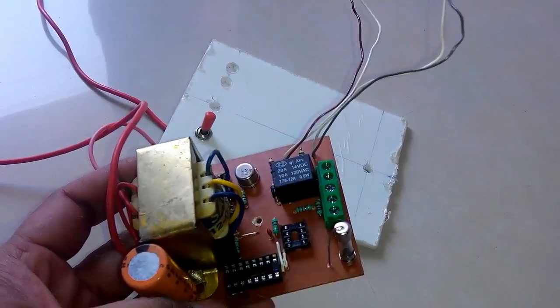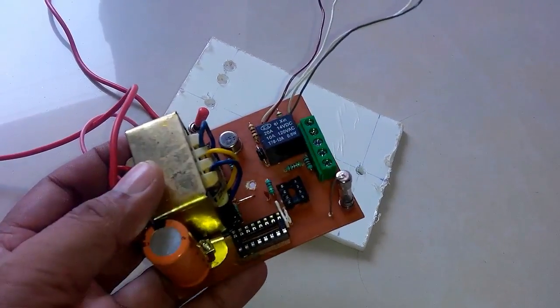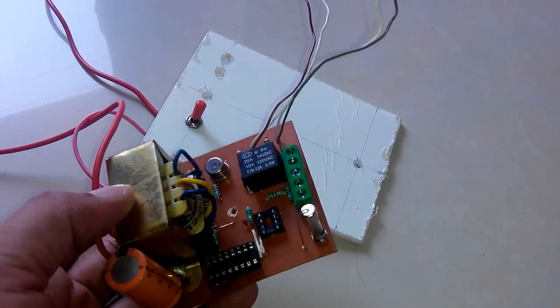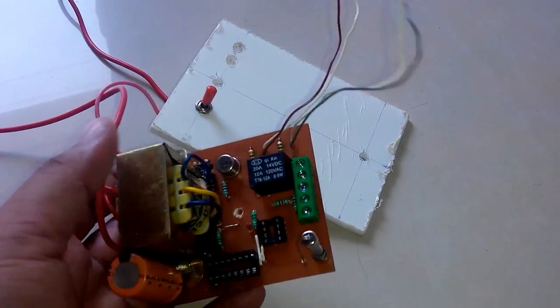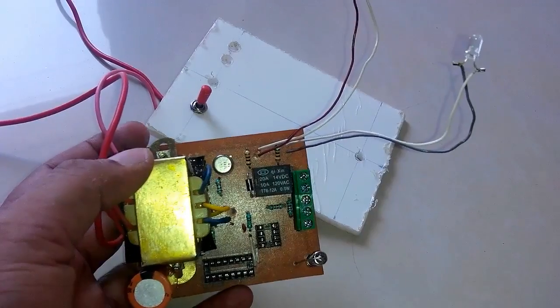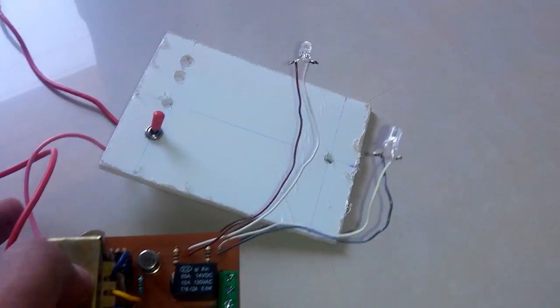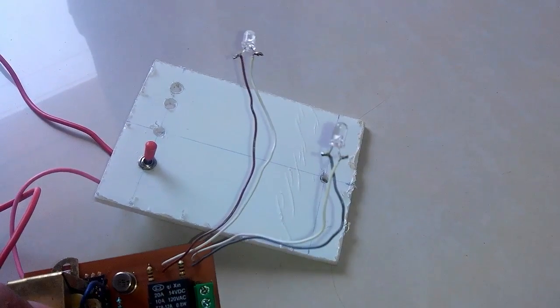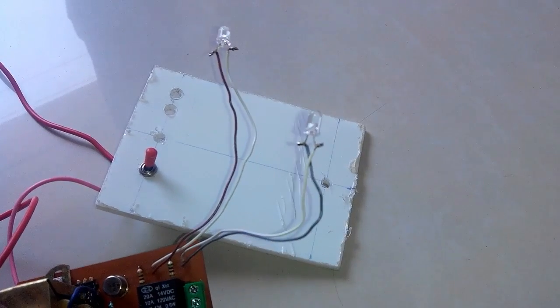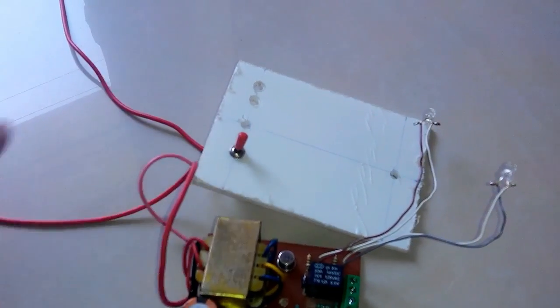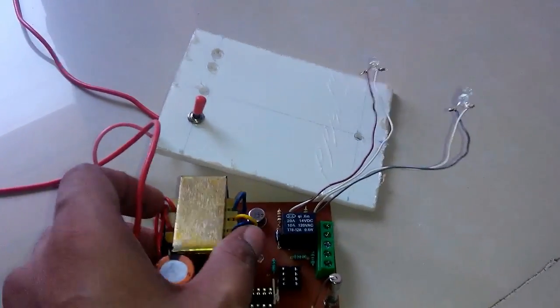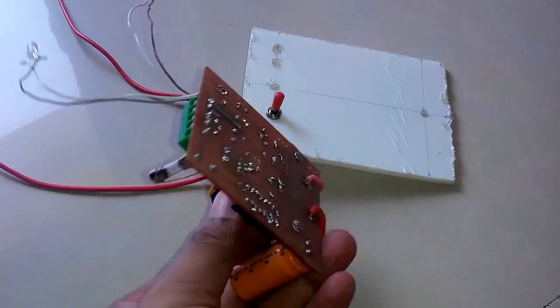Now the automatic pump controller is prepared. All the components are soldered and populated on the PCB. We have placed two LEDs - one for power and one to show that the pump is on. We have put a switch to one of the mains.